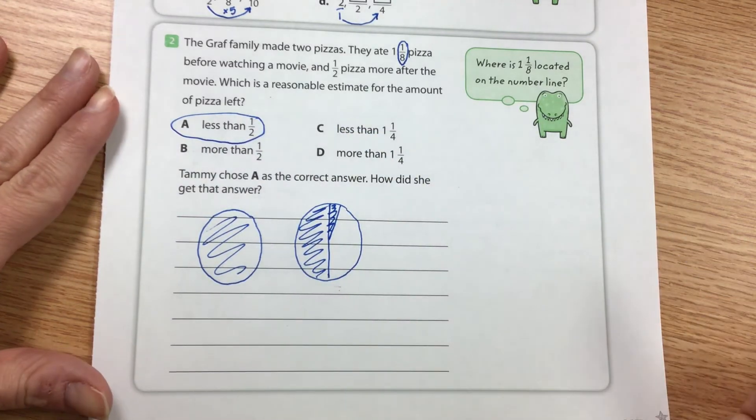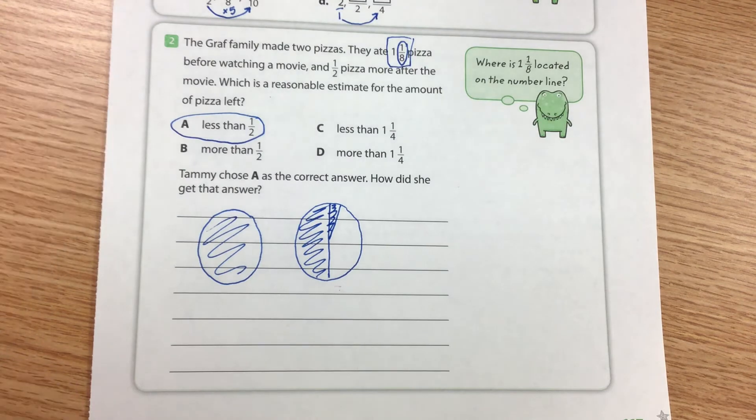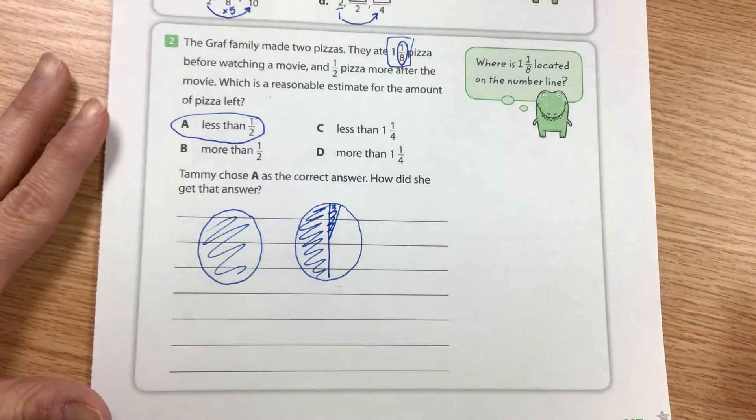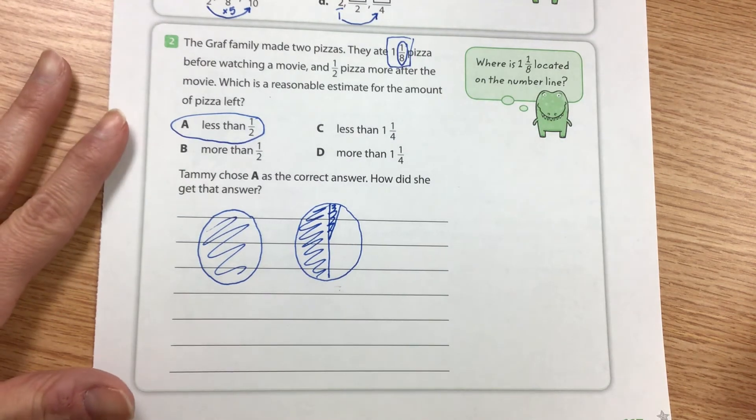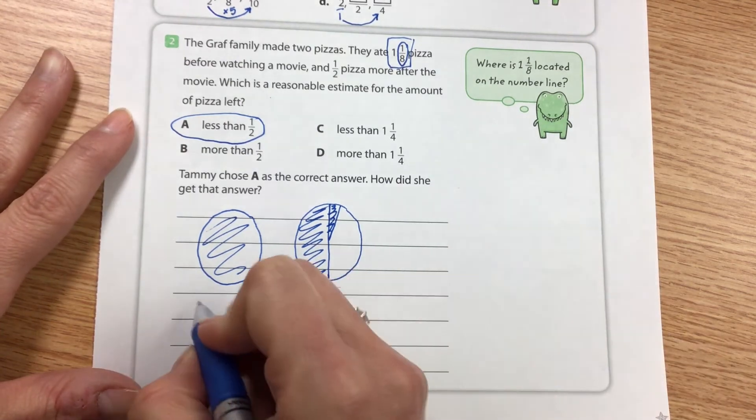So that's going to be a little bit less than one-half. And that's because before the movie they ate one and one-eighth pizza. So Tammy correctly estimated that since one and one-eighth is a little bit more than one, then they ate more than one and one-half pizzas.